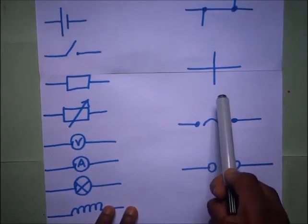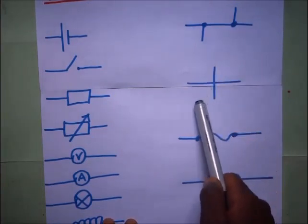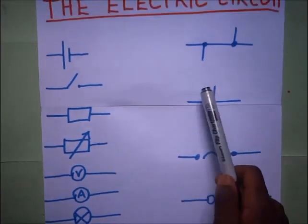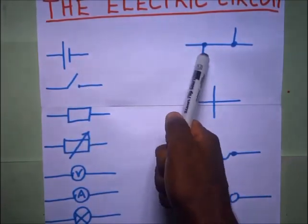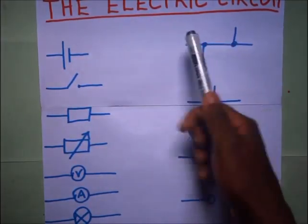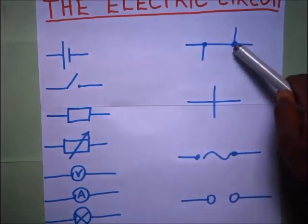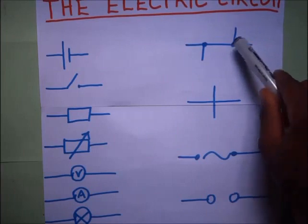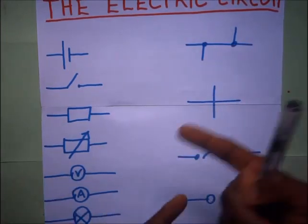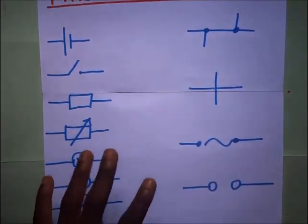This shows that wires are crossing each other, they are not joined. Then this shows that this wire is actually connected to that wire, meaning there is a junction there. Same as here, there is a junction there, this wire is connected there. But here those wires are just crossing each other.